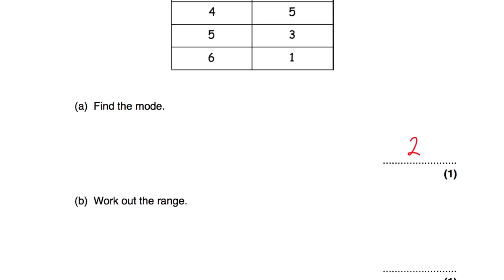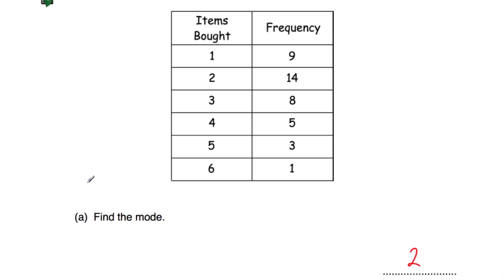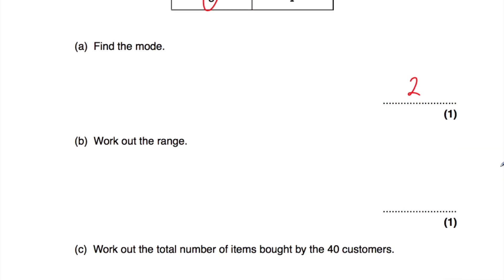Part B: work out the range. The largest number on the list is 6 and the smallest is 1. So the range is 6 subtract 1, which equals 5. The range is 5.